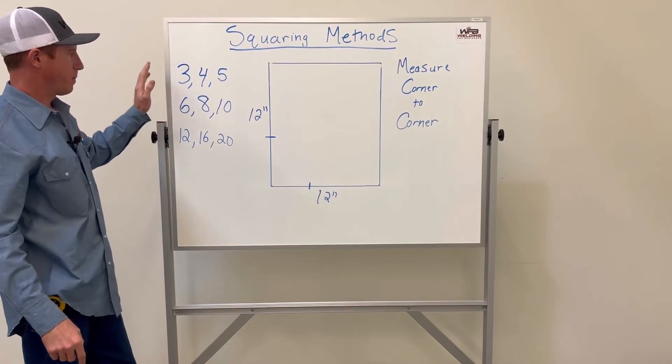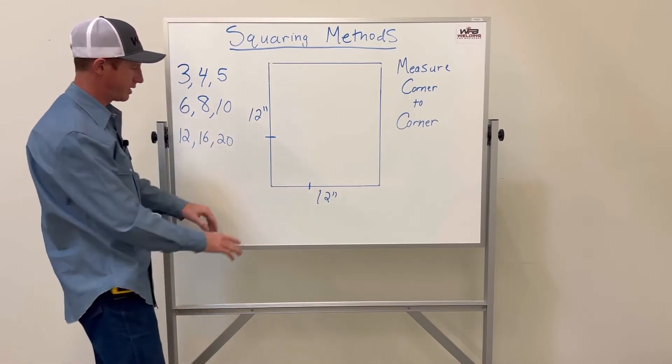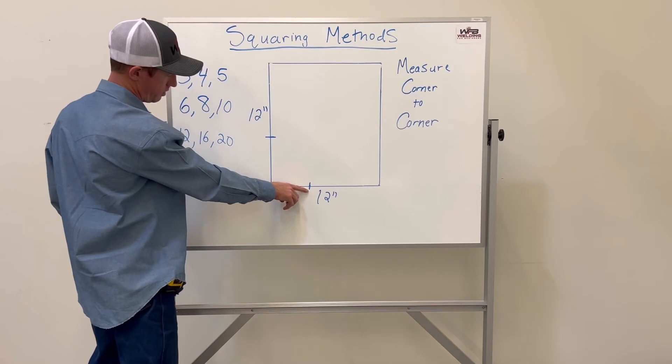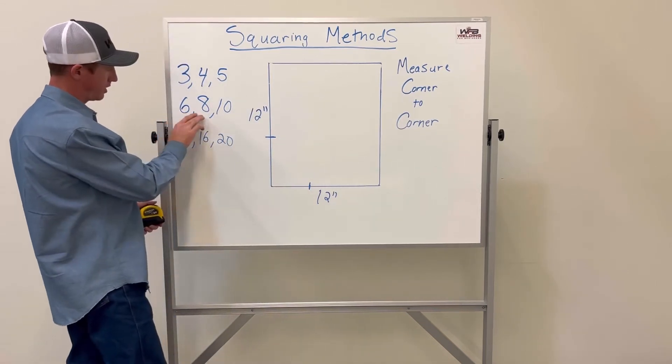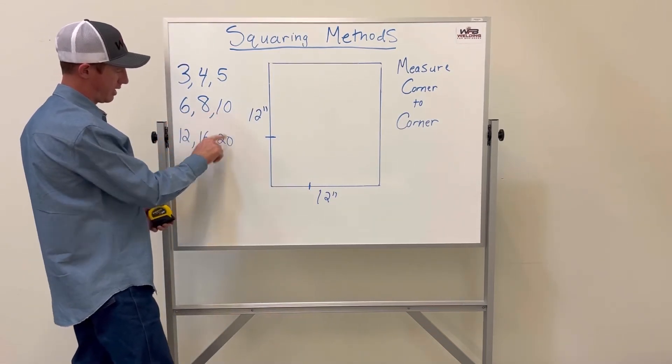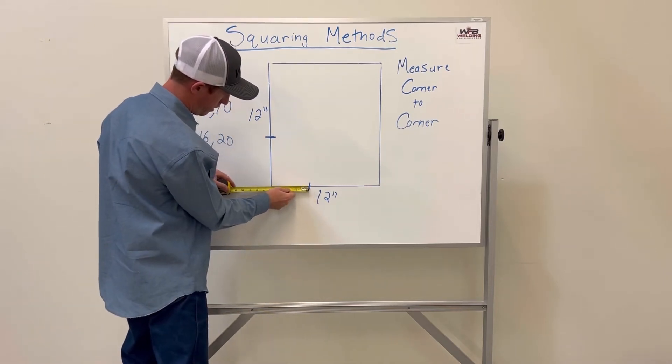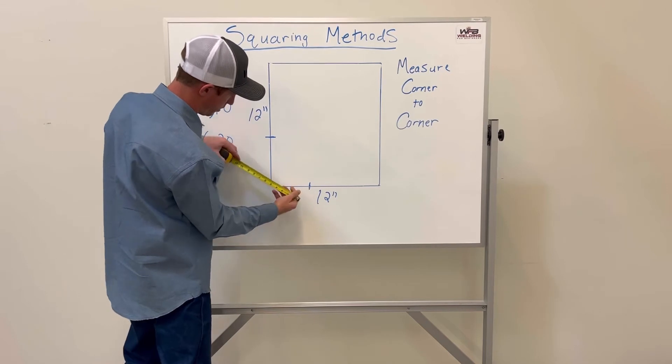In this case, I measured out six inches, so I'm using this method right here—6, 8, 10. You can see my line here. From there to the edge is six inches, and then from this edge to here should be eight inches.